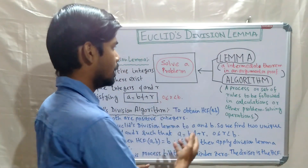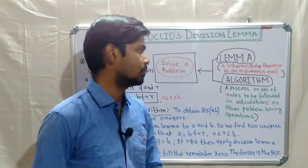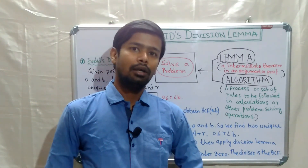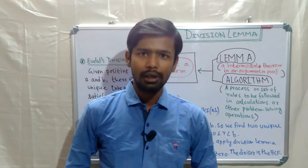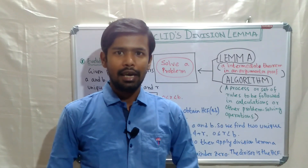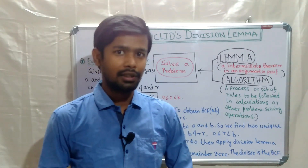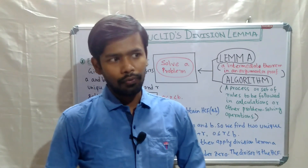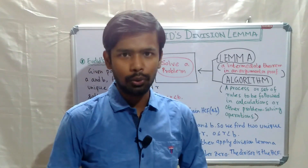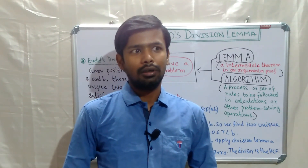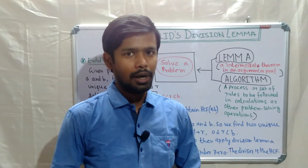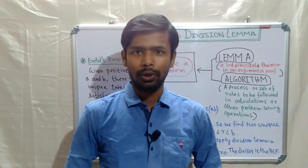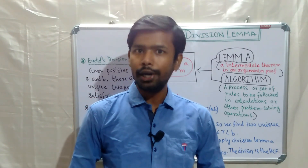A lemma is an intermediate theorem in an argument or proof — that is, a statement which is already proved. For example, the statement 'every even number is divisible by 2': we can check if it's true. For 2, it's divisible by 2 and is even; for 10, it's also divisible by 2 and is even. So it is proved that the statement is true.